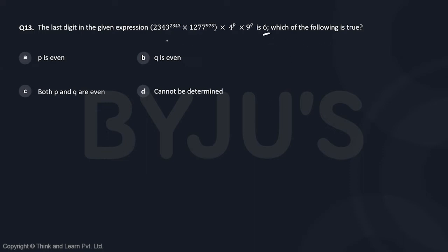Let's simplify the given term. We can write the first term as 3 raised to 43 times 7 raised to 75 times 4 raised to p times 9 raised to q.